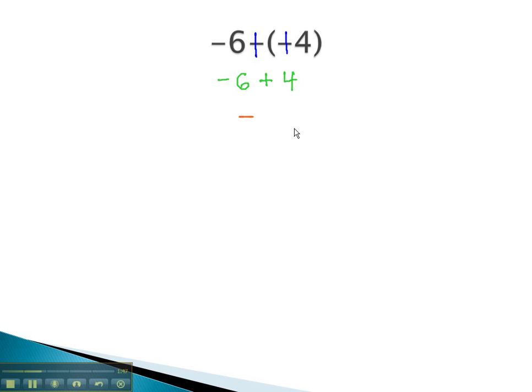6, keeps the sign, negative, and then we subtract to see how many negatives are left. 6 minus 4 is 2. We're left with negative 2 for our solution when we add the opposite.